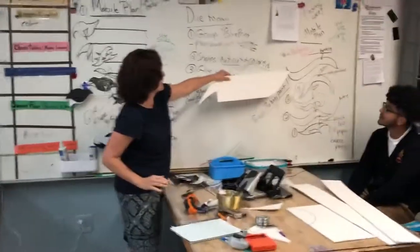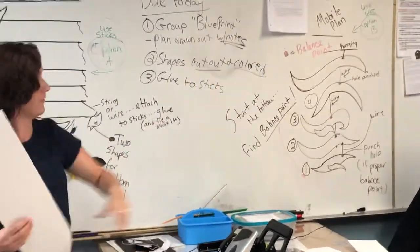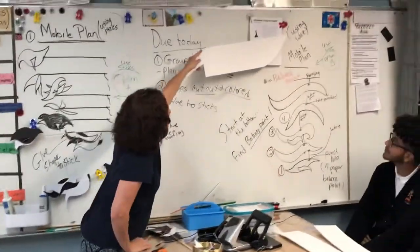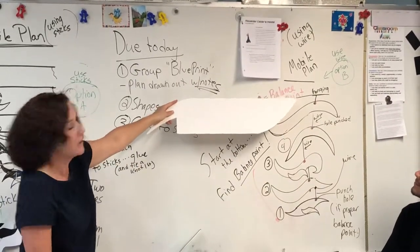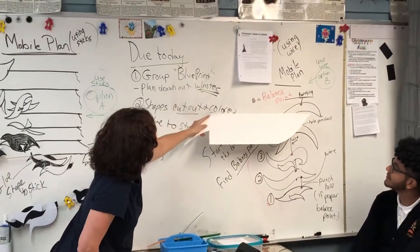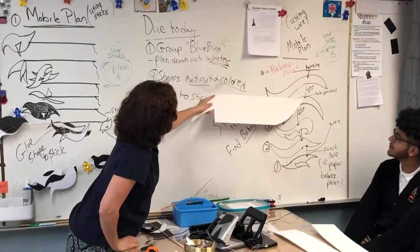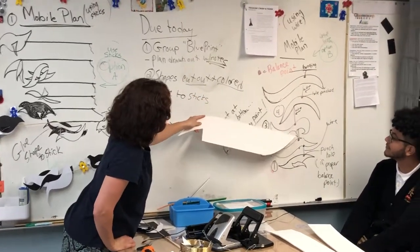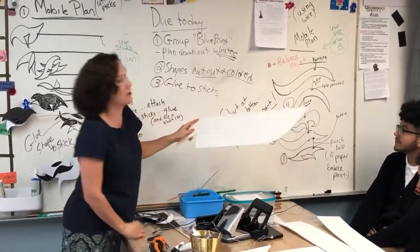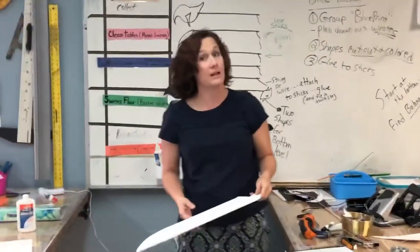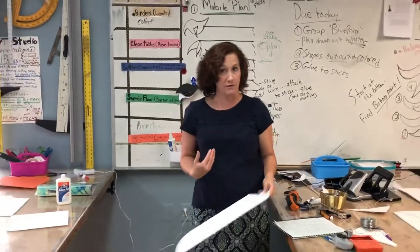So, if we come over to this side right here, if you look, option B, if you don't want to use the sticks, is to use wire. And what you would do is, you would have to find your hanging balancing point. So, in your sketch, you're going to guess where that balancing point is. They would be attached with wire, string, or fishing line, which is clear.